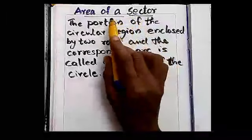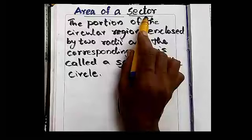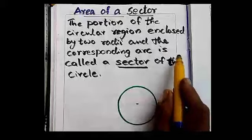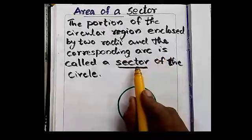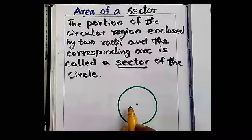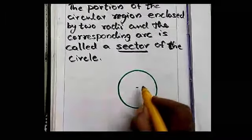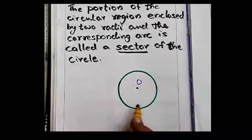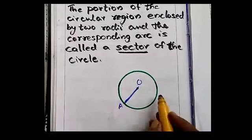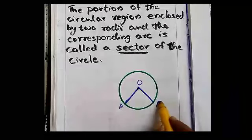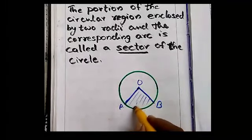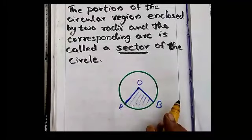Our topic is area of a sector. What is a sector? The portion of the circular region enclosed by two radii and the corresponding arc is called a sector of the circle. A circle is given with center marked as O. Now, two radii are selected: one radius OA and another radius OB. This portion inside is called a sector.